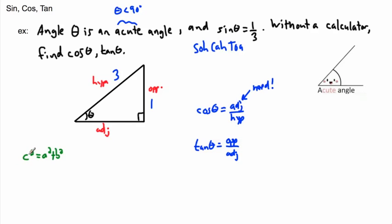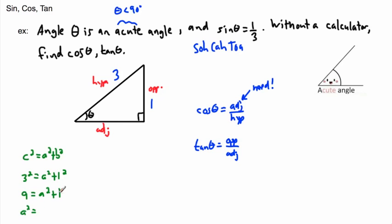The hypotenuse is 3, so 3² = a² + 1², where a is the adjacent. That gives 9 = a² + 1, therefore a² = 9 − 1 = 8, and that means a equals the square root of 8.